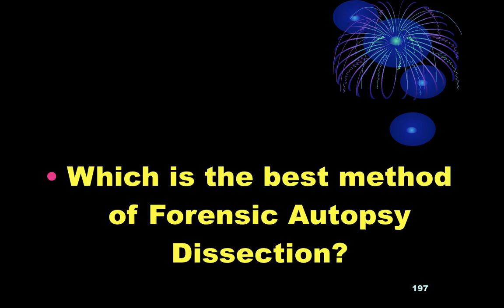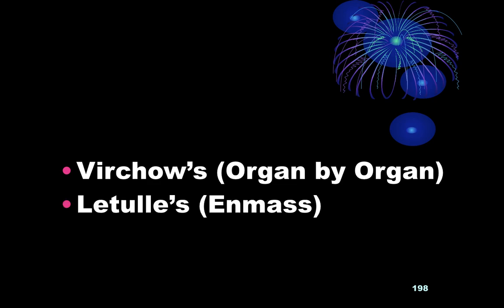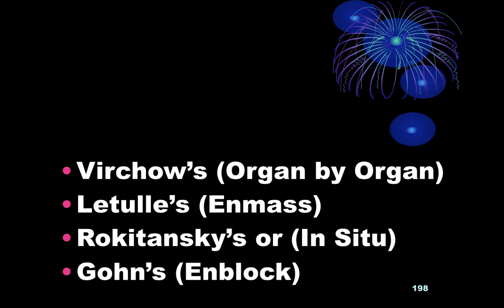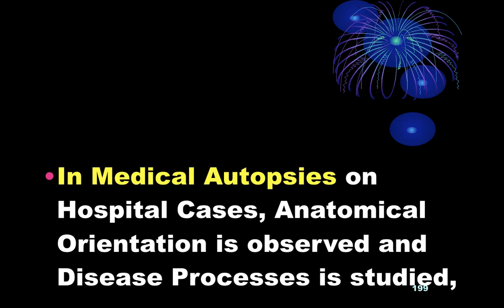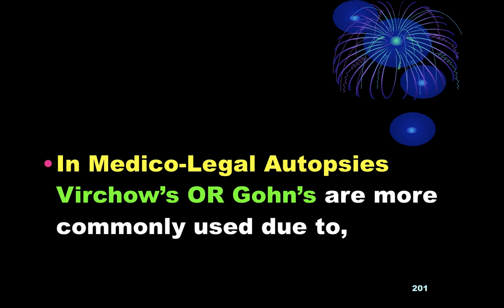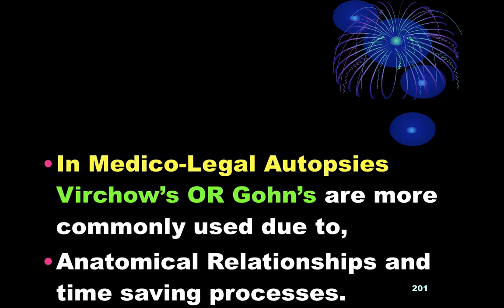Which is the best method of forensic autopsy dissection? Virchow's is organ-by-organ, Letulle's is en-masse, Rokitansky's is in-situ, and Ghon's is en-block. In medical autopsies on hospital cases where anatomical orientation and disease process are studied, the Letulle's method is preferred. In forensic autopsies, Virchow's and Ghon's are more commonly used due to anatomical relationship and time-saving processes.